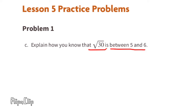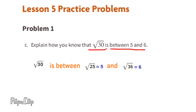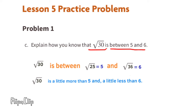Problem 1c: Explain how you know that the square root of 30 is between 5 and 6. 5 squared is 25 and 6 squared is 36, so the square root of 30 is going to be between 5 and 6. 25 is closer to 30 than 36 is, so the square root of 30 is going to be a little bit closer to 5 than it is to 6.